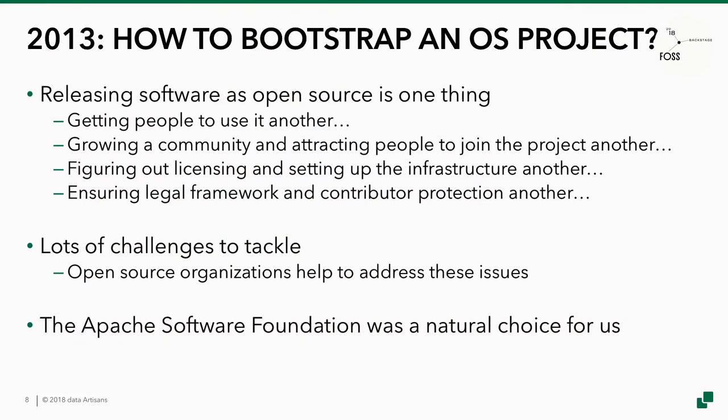And that's basically what we did. About the open source part — releasing software as open source is one thing, but then there are a couple of other things to it. You need to get people to use the software. You also want to build a community of people contributing to the project and make it attractive for people to contribute. You have to figure out licensing, setting up the infrastructure, the whole legal framework around an open source project. All of that is not that easy to do, and there are lots of challenges to tackle. Luckily, there are organizations — open source organizations — that exactly help projects tackle most of these problems.